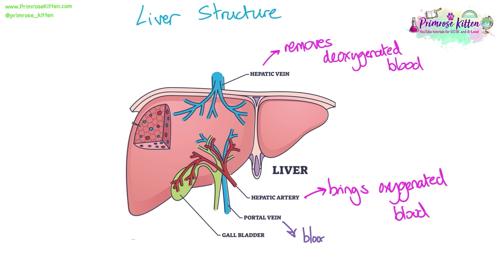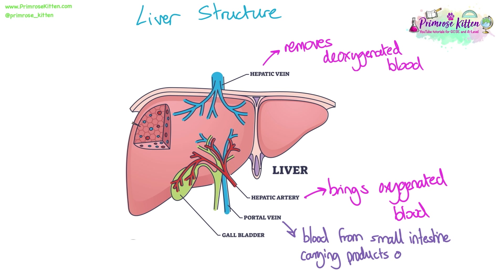The hepatic portal vein brings blood from the small intestine, which means it contains all the products of digestion, including any toxic substances that may have been absorbed. The bile duct is where bile travels to the gallbladder to be stored.